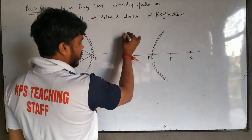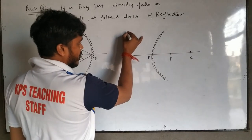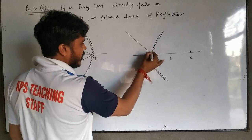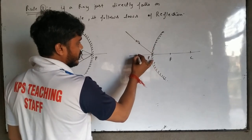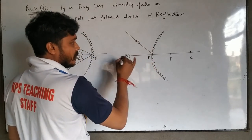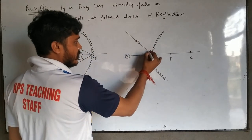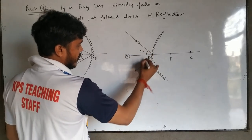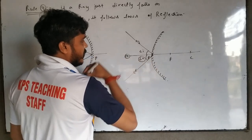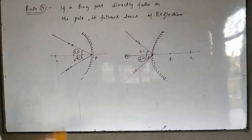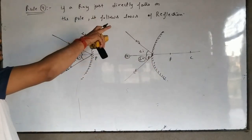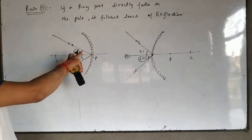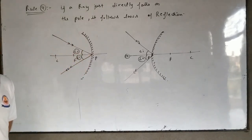Similarly, in the convex mirror, the ray is falling on the pole directly. The principal axis behaves as a normal. This is the angle of incidence and this is the angle of reflection. So this is Rule 4: if a ray directly falls on the pole, it follows the law of reflection.